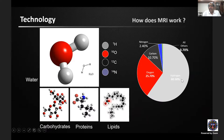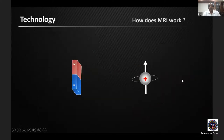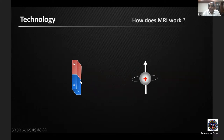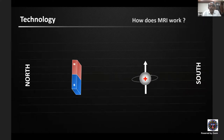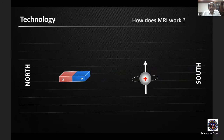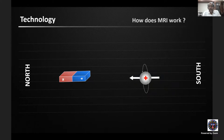The second important property is that hydrogen protons, because of their rotation around their axis, behave like small bar magnets that can be influenced by external magnetic fields. When a powerful external magnetic field is applied, protons in the human body align themselves along the north-south axis — just like a bar magnet aligns to an external field. This principle is what we employ in MR imaging.